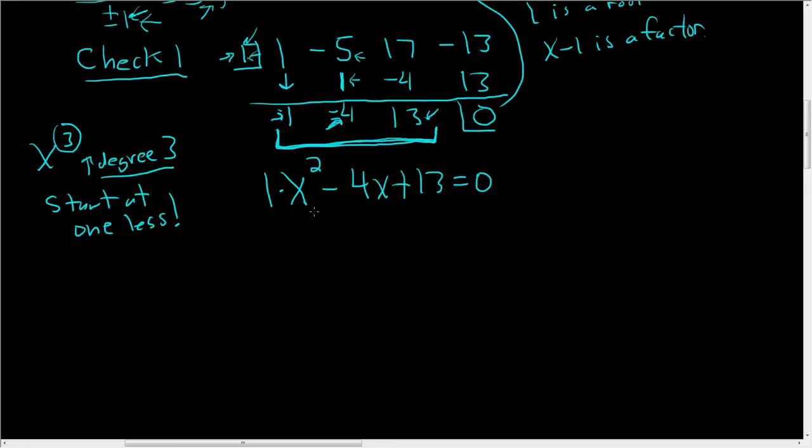So this is kind of hard to solve. It's hard to factor in your head. So what we'll do is use the quadratic formula. In this case, a is 1, b is negative 4, and c is 13.